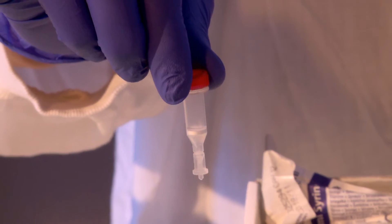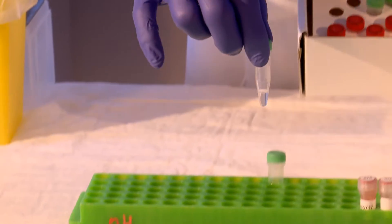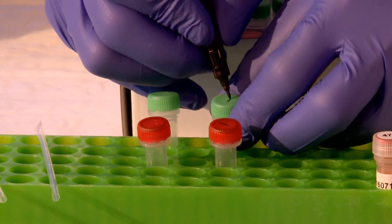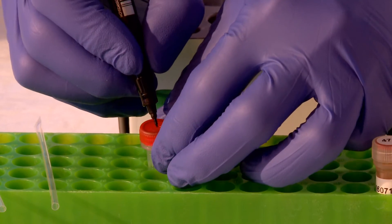Remove one red-capped column and one green-capped vial for each sample to be prepared. Label both the red and green lids clearly with the sample name.